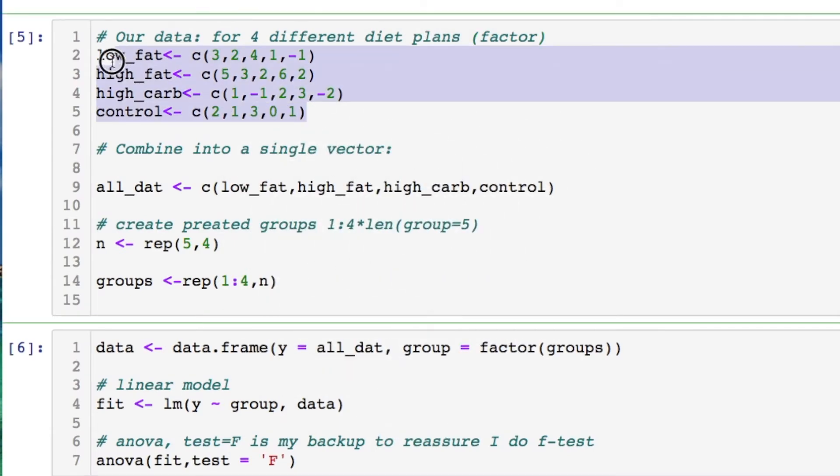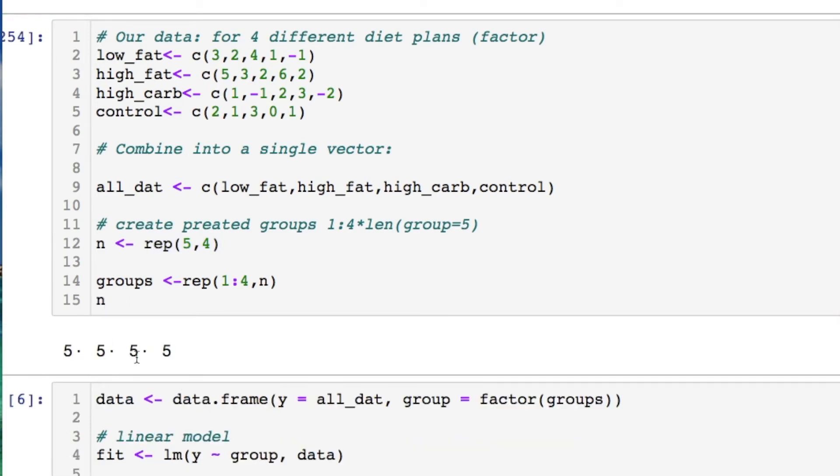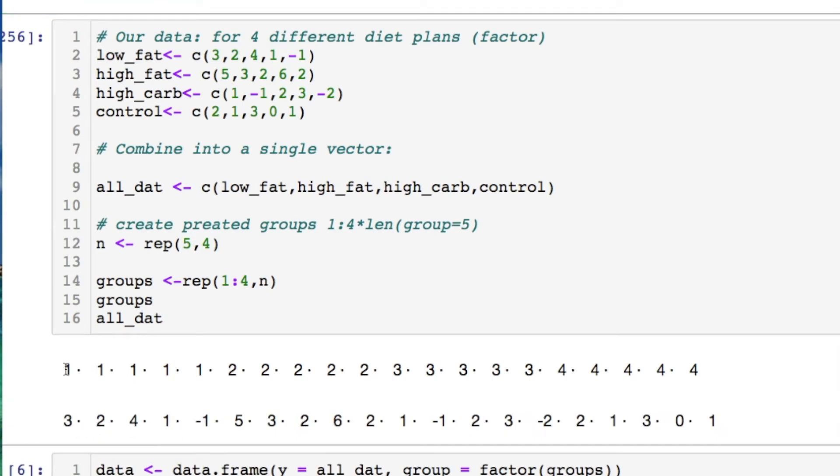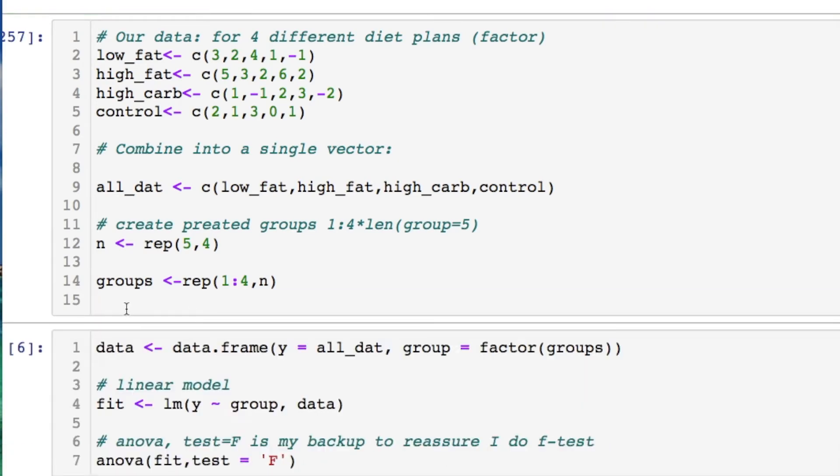We take in our data. This is what it looks like as vector form. We combine it into a single vector. You can throw this into a data frame if you want to just set it up different. Then I do this repetition. This repetition is allowing me to create, let me show you. It's giving you four groups of five which we're going to repeat. And this is going to basically match up with our data. So here's our data. This low fat corresponds to this point. This low fat corresponds to this point. And so on through the different groups. So we could do our mapping.